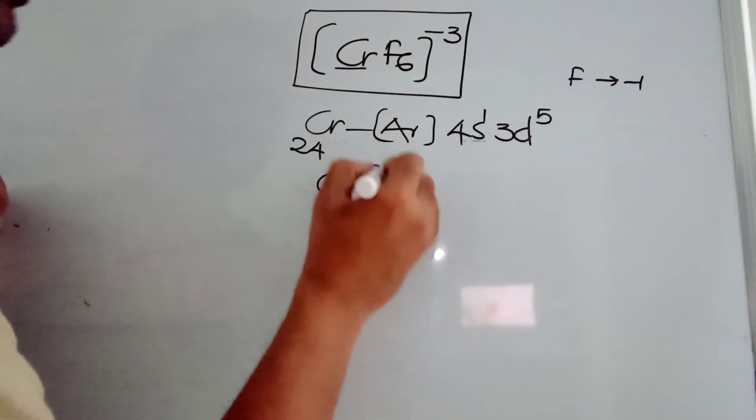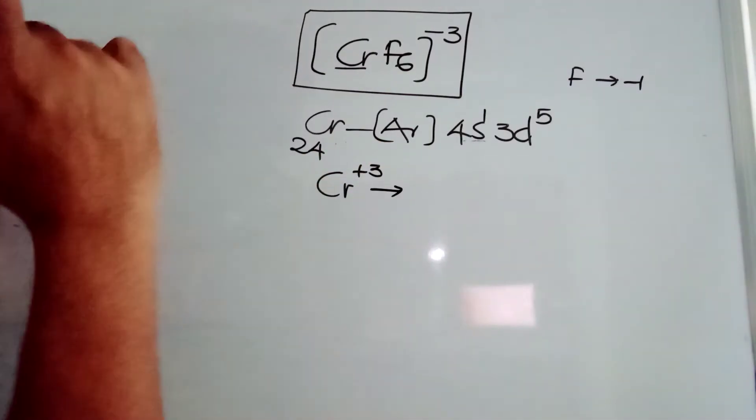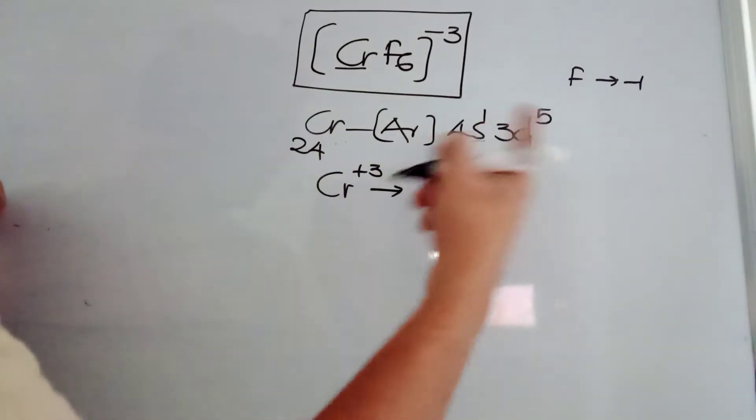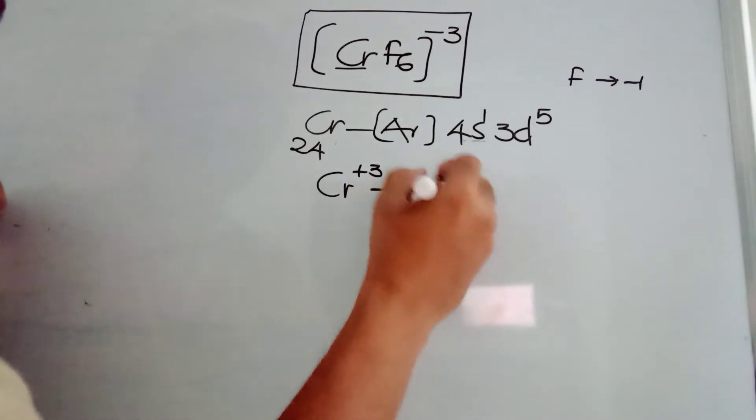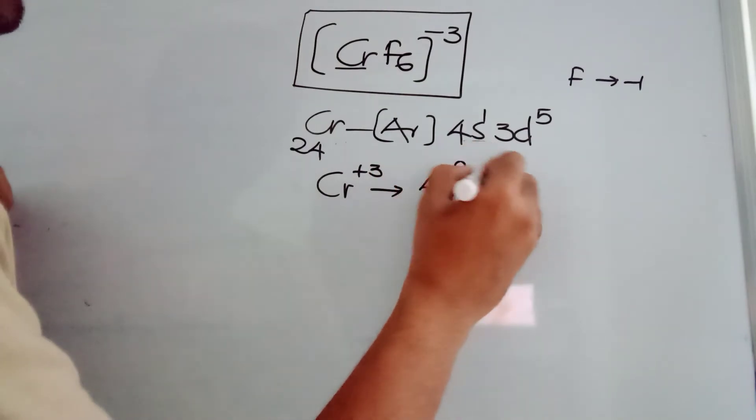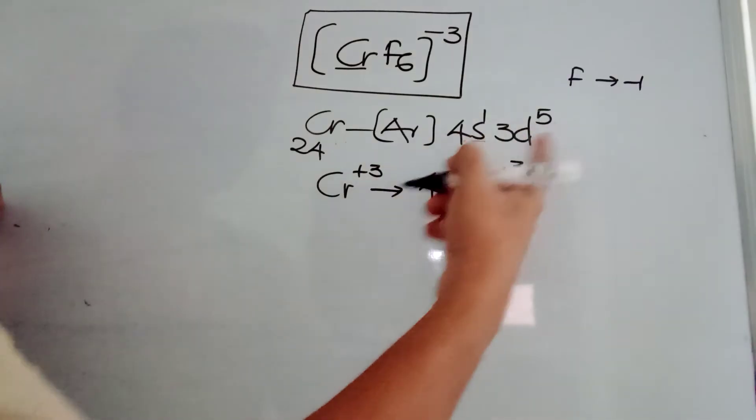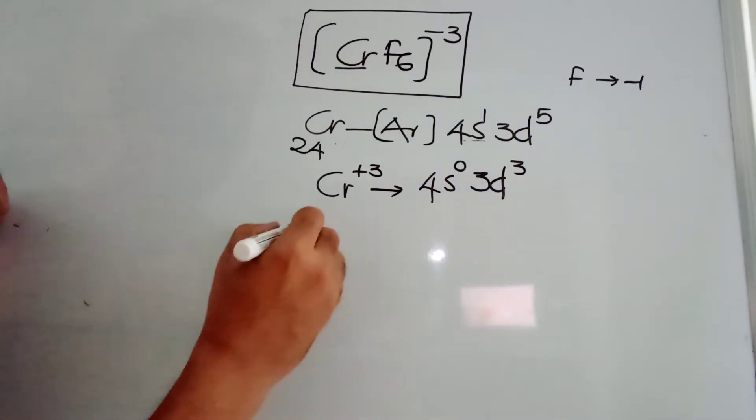Chromium plus 3 means it has lost 3 electrons. First, you need to remove the electrons from S-orbital, then D-orbital, 3 electrons you need to remove. It will become 4S0, 3D3. 1 from here, 2 from here, total 3 electrons done.